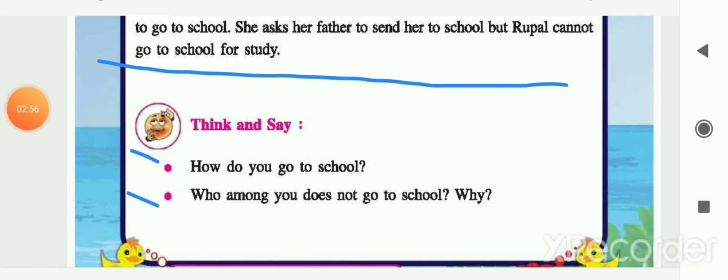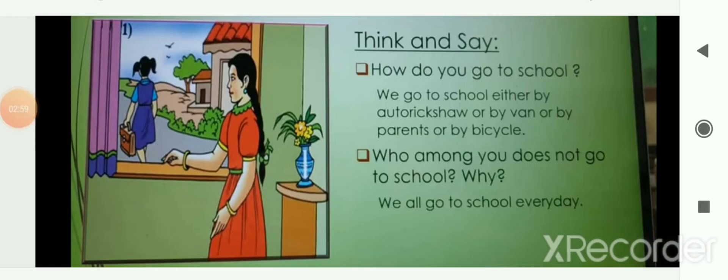You do not have to write these answers — we will write them while solving the exercise. Just think and say the answers. We go to school either by auto rickshaws, van, bus, with parents, or by bicycle. Everyone's answer might be different. Most children living nearby go to school every day. If any child living near you is not going to school, find out the reason why.